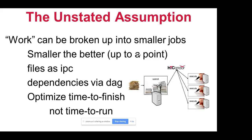An unstated assumption underlies this: your work can be broken up into a bunch of independent jobs, and the smaller the jobs the better, so they can run in as many places as possible. We also assume files serve as inter-process communication mechanisms, and that dependencies can be specified as a DAG of independent jobs. This is not the MPI model and doesn't fit every problem, but experience at UW and across the OSG shows it works for a large majority of scientific and research needs.